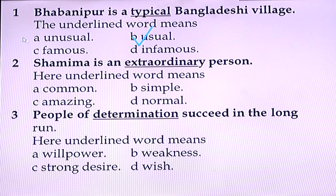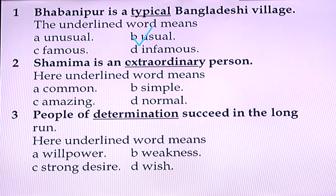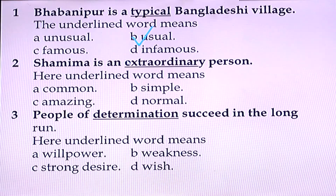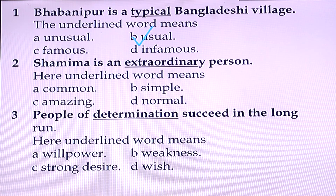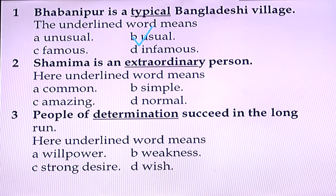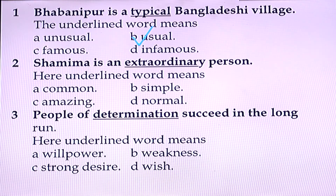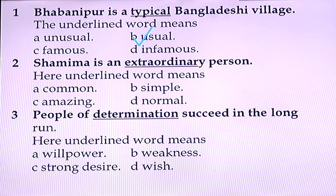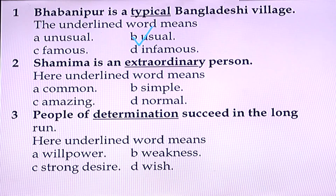Question number two: 'Shamima is an extraordinary person.' Here the underlined word means: (a) common, (b) simple, (c) amazing, (d) normal. What is the best answer here?